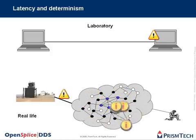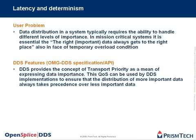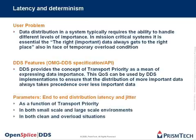The real life situation is hard to test. OMG DDS has several features that support this user problem. Most importantly, the transport priority QoS, which can be used by the DDS implementation to ensure that the distribution of more important data always takes precedence over less important data. With this in mind, we define the parameters end-to-end distribution latency and jitter as a function of the QoS transport priority, in both small-scale and large-scale environments, in both clean and overload situations.